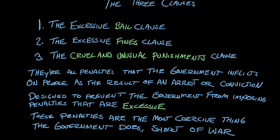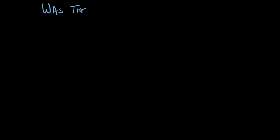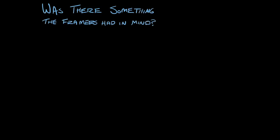In a lot of cases in the Bill of Rights, you see the framers reacting to some historical evil that they hope to prevent. For example, the Third Amendment says you can't quarter soldiers in private citizens' homes because that had been such an important tipping point in the American Revolution. Was there something that the framers had in mind as a particular historical evil that they wanted to prevent?